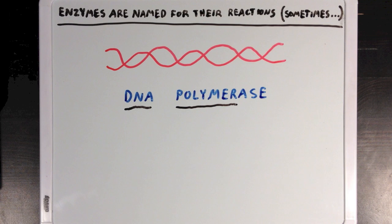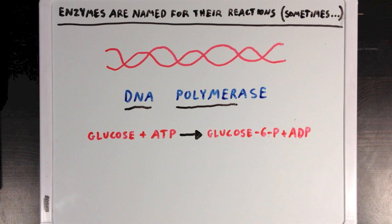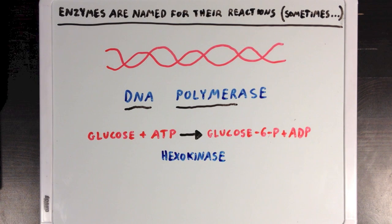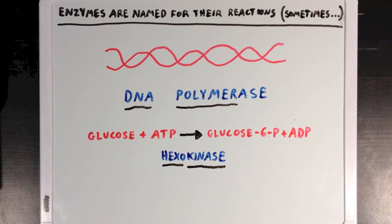The suffix '-ase' is usually one that you find at the end of most enzyme names. Another great example is the enzyme that catalyzes the first step of glycolysis — the reaction between glucose and ATP to form glucose-6-phosphate and ADP — which is called hexokinase. 'Hexo' refers to the number 6, a reference to glucose being a 6-carbon sugar, and 'kinase' refers to enzymes that add phosphate functional groups to different substrates. So overall, hexokinase adds phosphates to 6-carbon sugars like glucose.